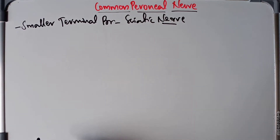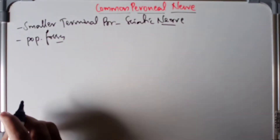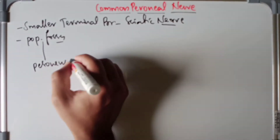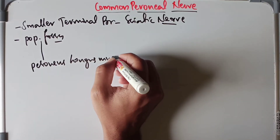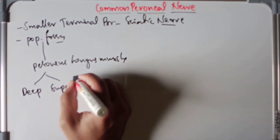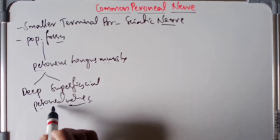When it comes to the common peroneal nerve, it will appear in the popliteal fossa, go downwards, and then pierce the peroneus longus muscle, dividing into the deep and superficial peroneal nerves. So the course is from the popliteal fossa, piercing the peroneus longus muscle, and then dividing into the deep peroneal nerve as well as the superficial peroneal nerve.